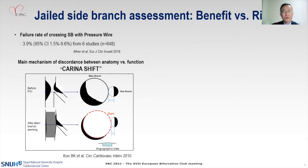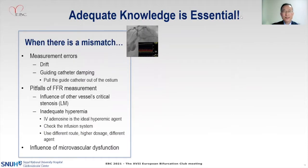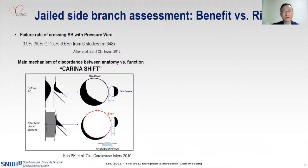We want to stress the importance of adequate knowledge in the interpretation of results. So if you have a lesion that is angiographically significant but physiologically insignificant, you should not just say this is a common mismatch. Before you conclude that, you have to check all these possibilities. And the same applies to risk and benefit assessment for any physiological assessment, especially for jailed side branches.